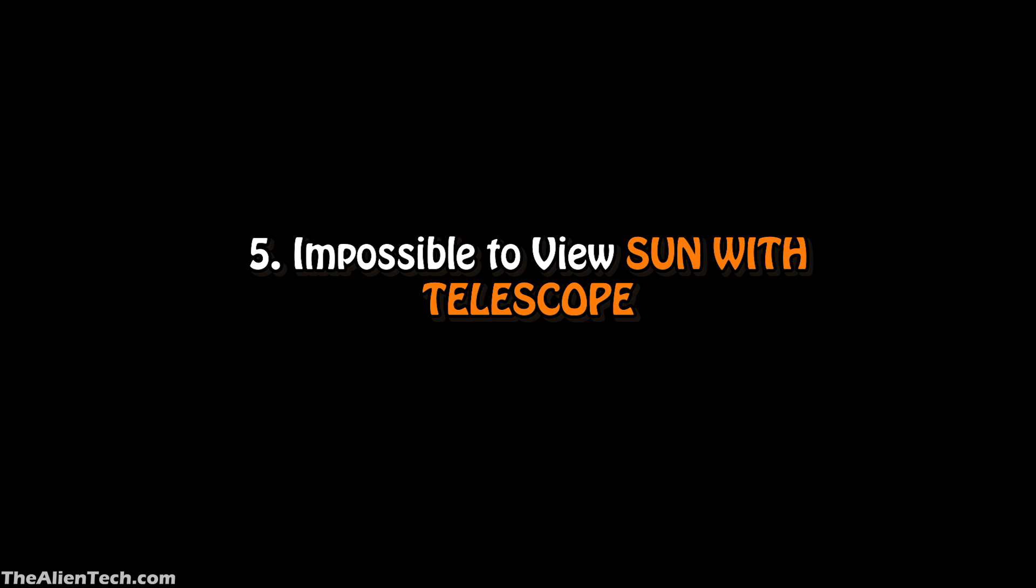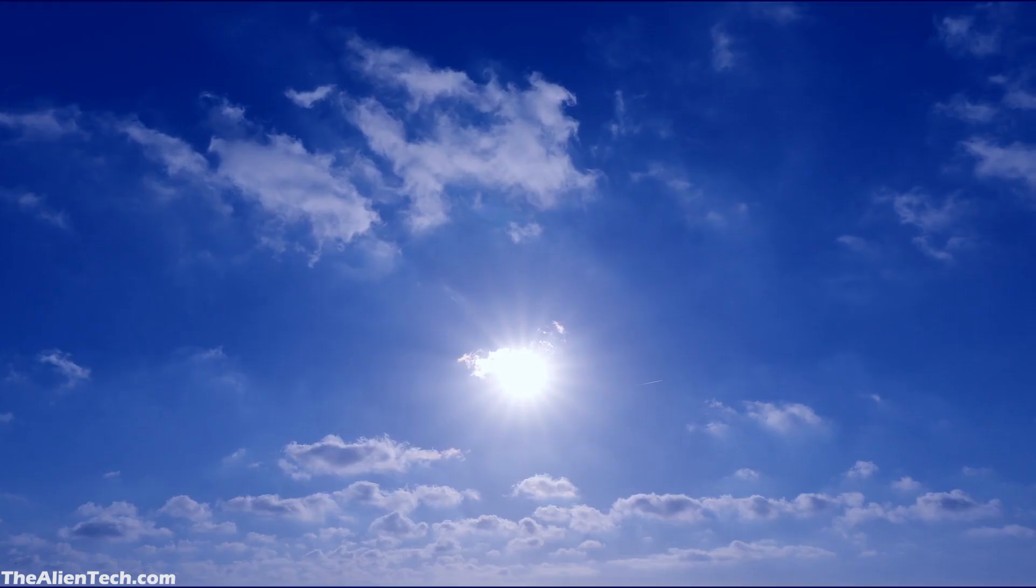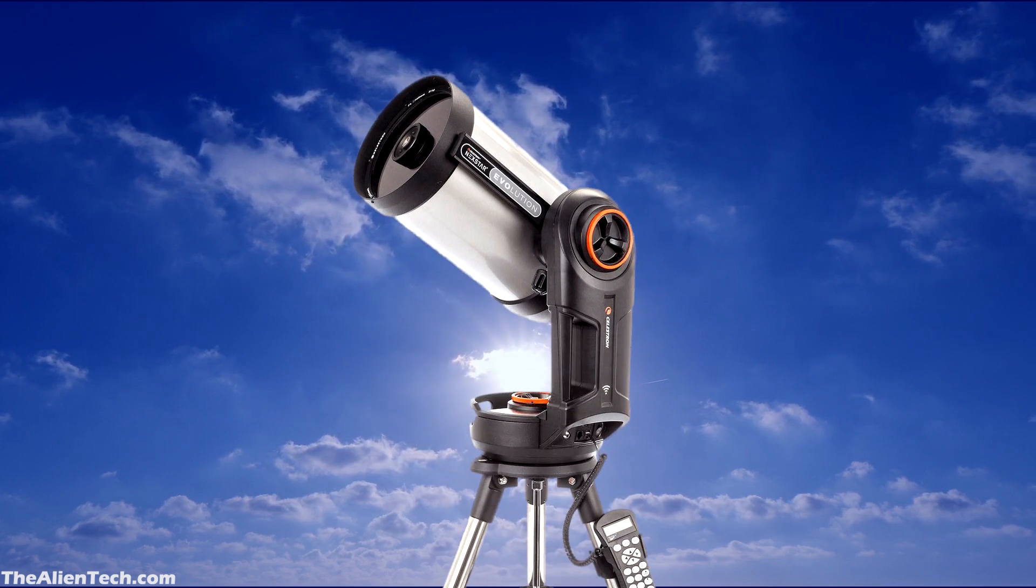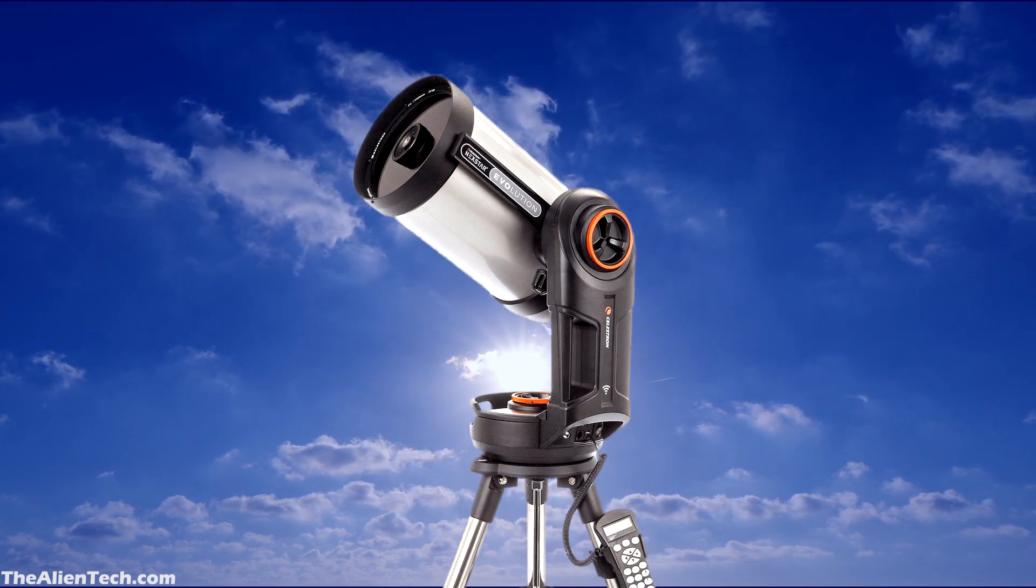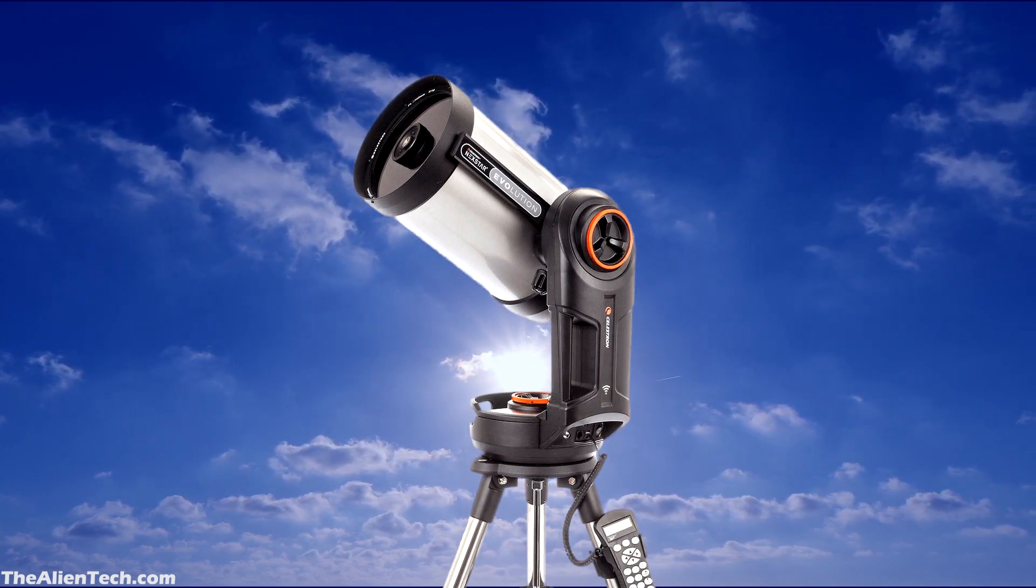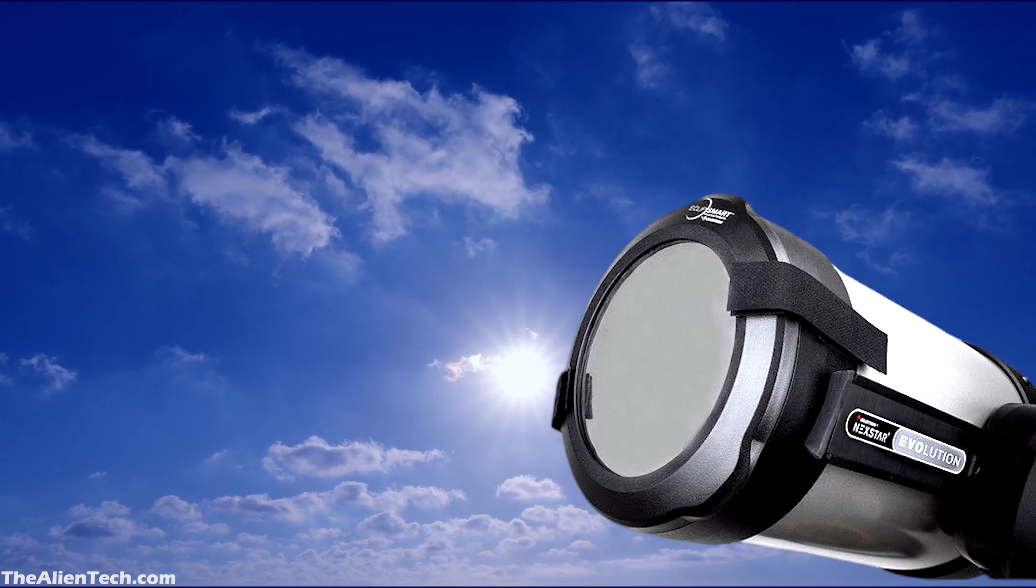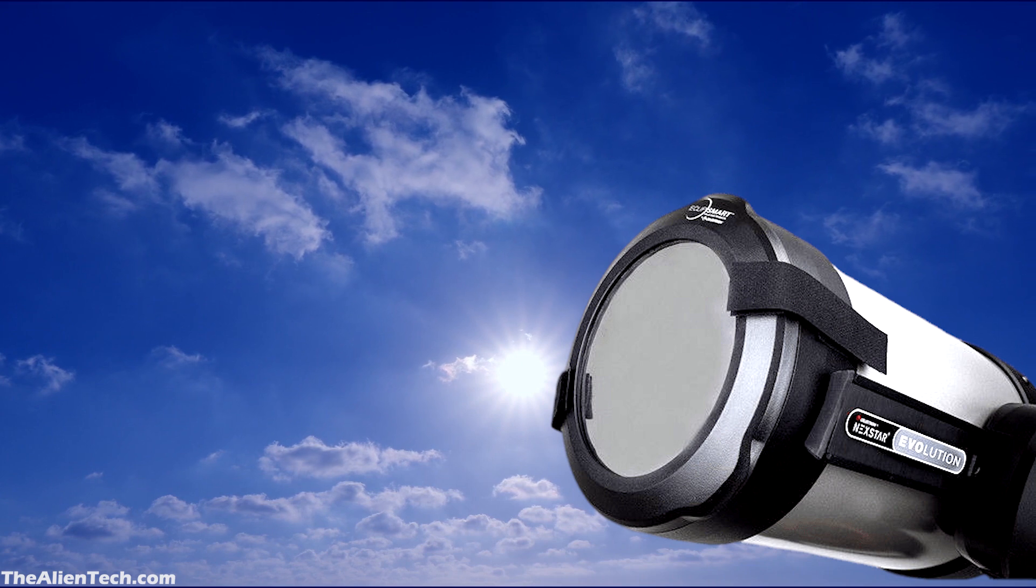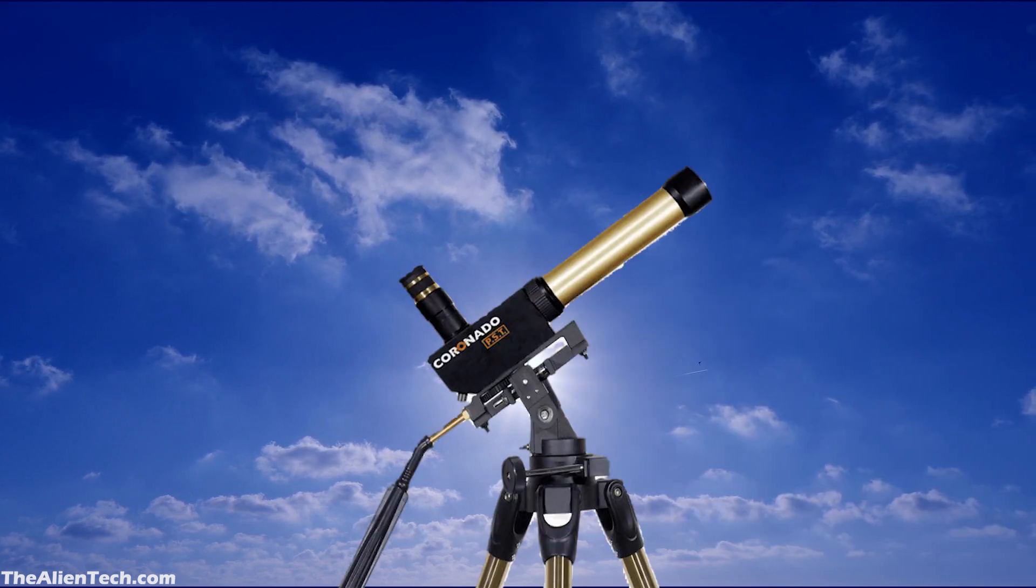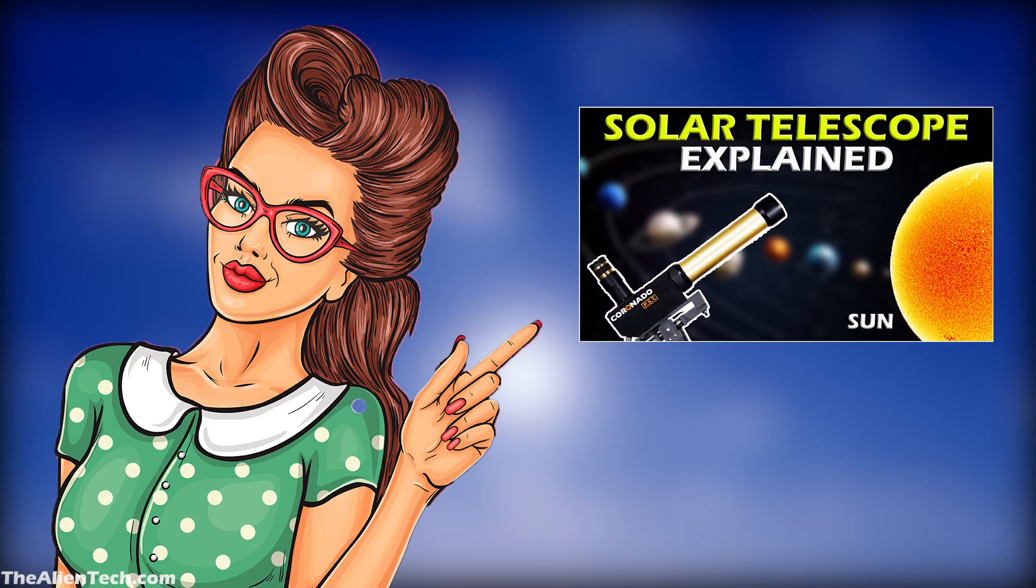Myth number five: It is impossible to view the sun through the telescope. If you have a normal telescope, then you should not look directly at the sun through your telescope. Otherwise, you will end up permanently damaging your eyesight. You can see the sun through a normal telescope with solar filters. You can also see the sun through a solar telescope. We have explained this topic in detail, and you should watch this video if you want to know more.